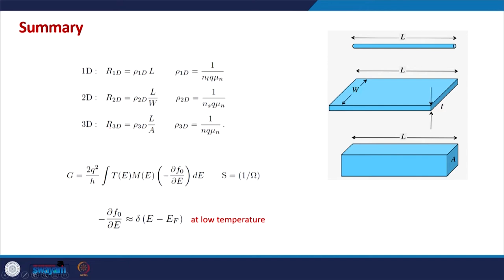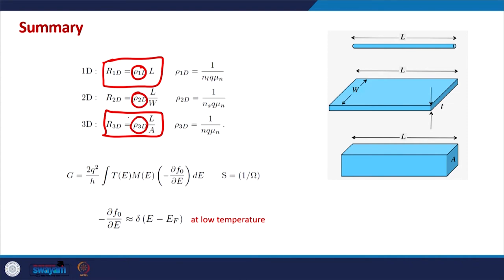We are contrasting resistance from these two formalisms. The classical understanding of resistance says that typically in a 1D, 2D, or 3D conductor, resistance is directly proportional to the length. In 2D it is inversely proportional to the width, and in 3D inversely proportional to the area. This constant of proportionality is the resistivity, and its inverse is the conductivity.